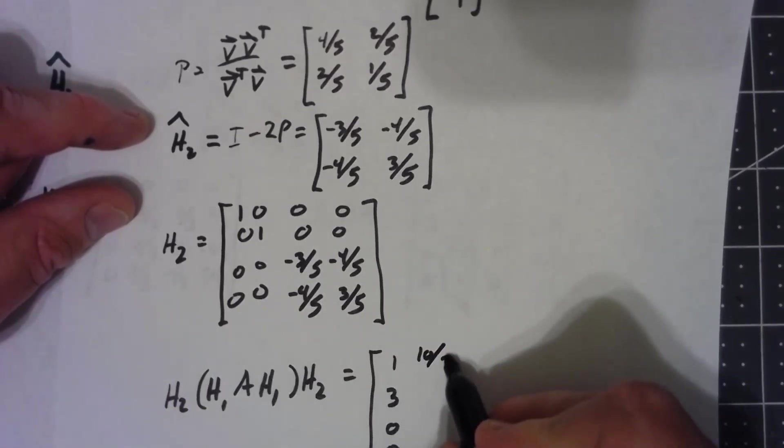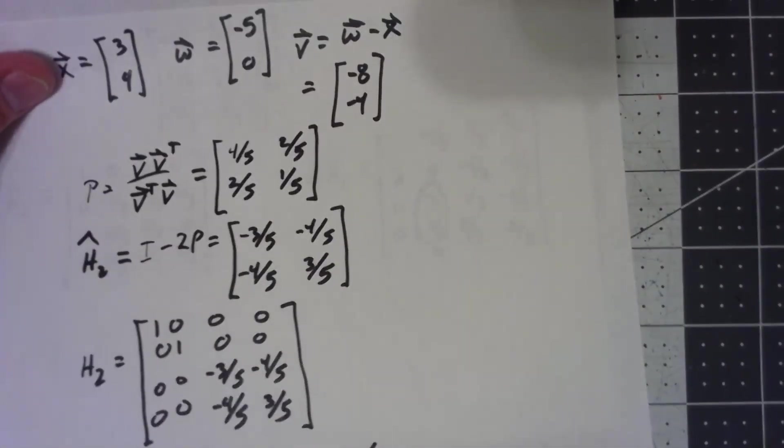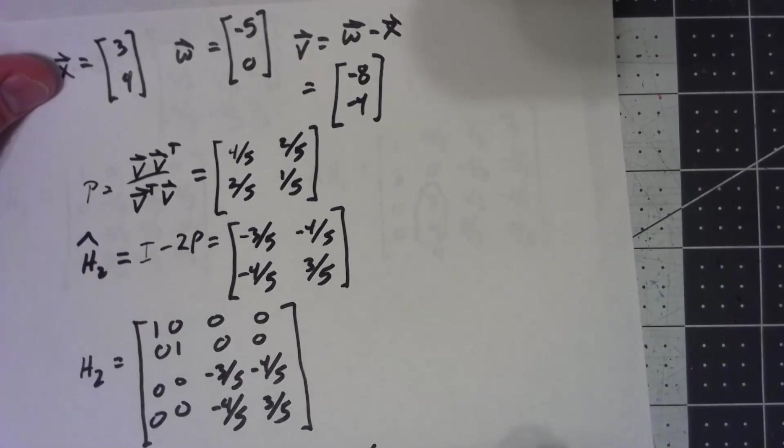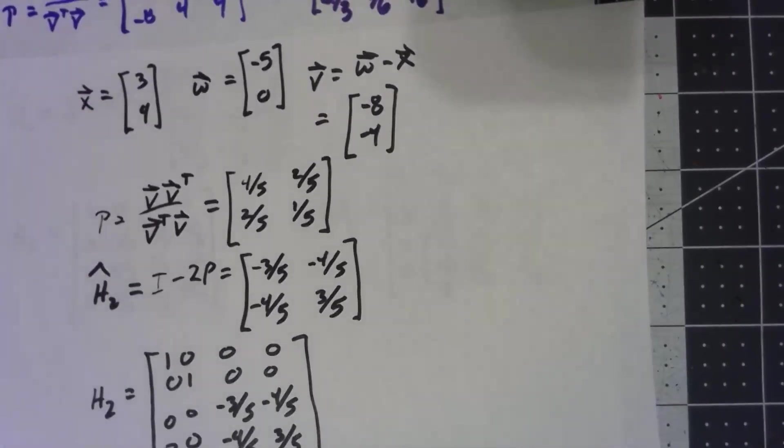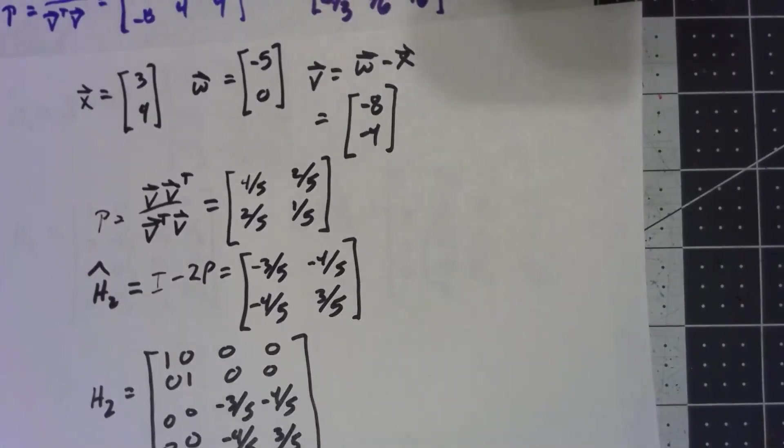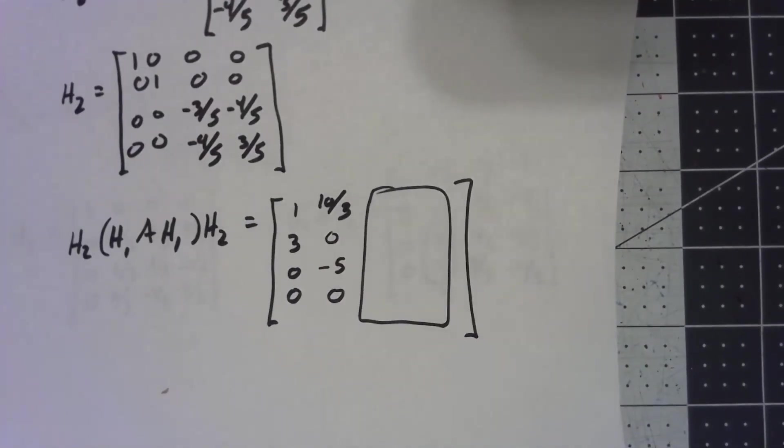And honestly, I didn't even bother working out this whole thing. But the first column stays the same. It was 1, 3, 0, 0. The 10 thirds stays the same. It was a 0. That stays the same. And then we reflected this to be a negative 5 there and a 0. And then we get junk over here, which doesn't matter in terms of getting into this form, because now we've got it in the upper Hessenberg form. And now applying the QR algorithm to this version of it, which has the same eigenvalues as the original matrix A, will work much better.